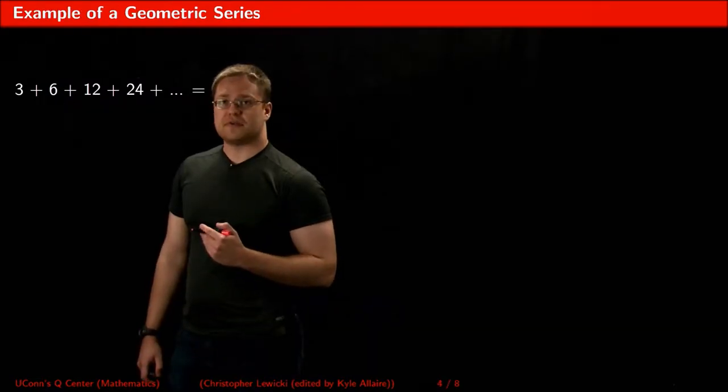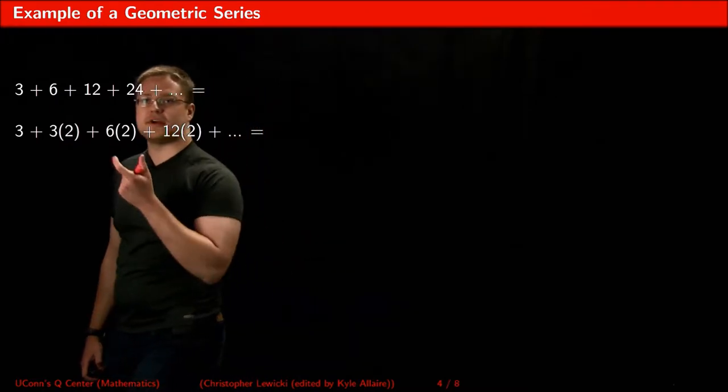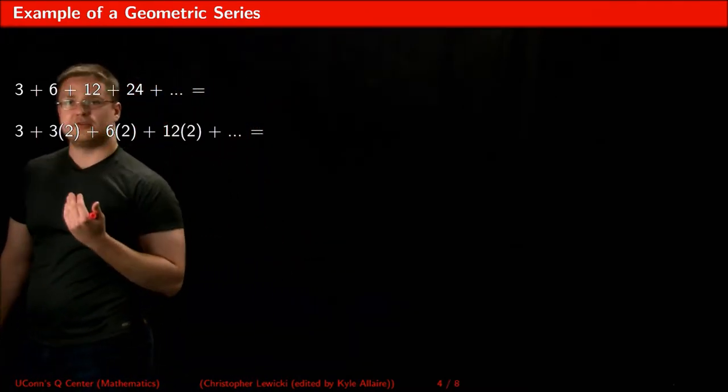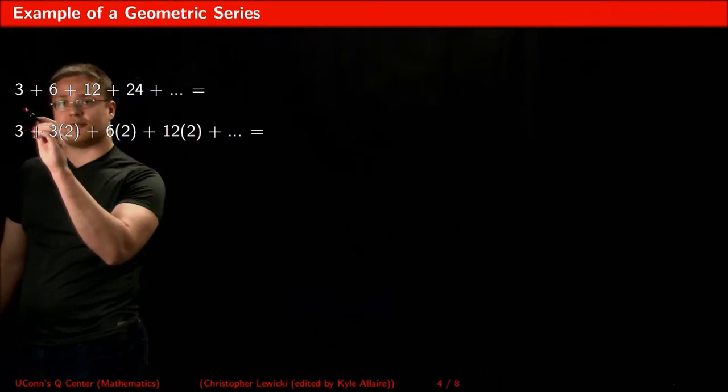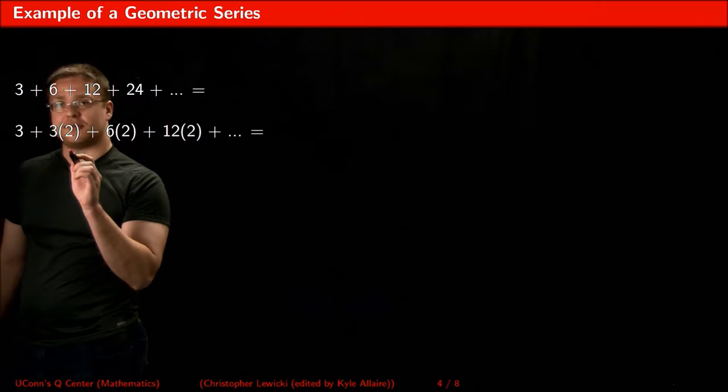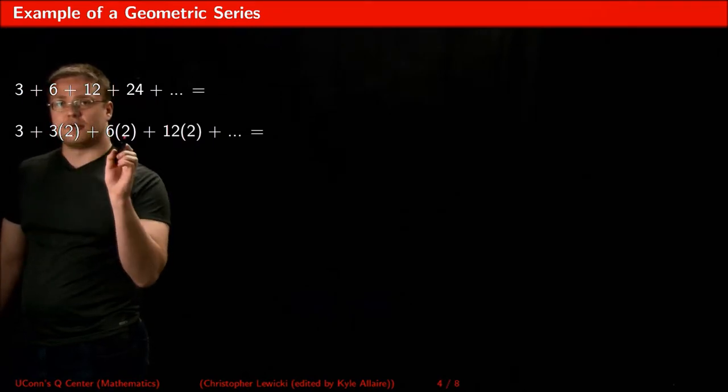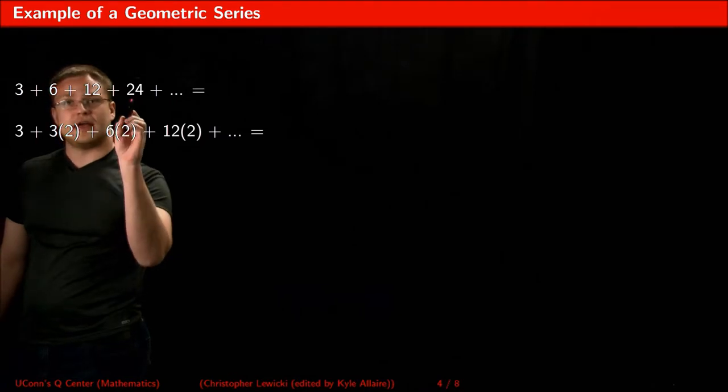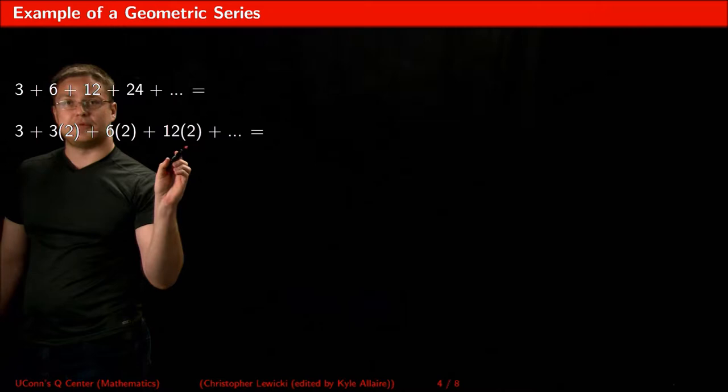Notice that I could rewrite this geometric series like this. And it's useful to write it this way because this makes it very clear what the common ratio 2 does to the series. 6 is just the previous term 3 multiplied by the common ratio 2, 12 is just the previous term 6 multiplied by the common ratio 2, and 24 is just the previous term 12 multiplied by the common ratio 2.